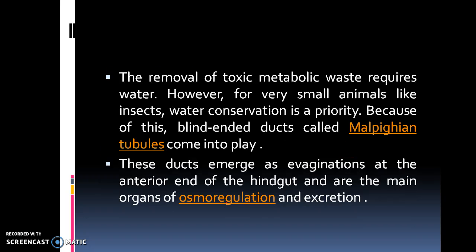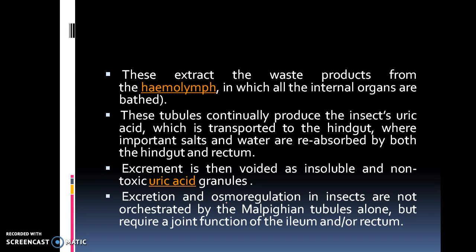The removal of toxic metabolic waste requires water. However, for very small animals like insects, water conservation is a priority. Because of this, blind dead-end ducts called Malpighian tubules come into play. These ducts emerge as evaginations at the anterior end of the hindgut and are the main organ of osmoregulation and excretion. They extract the waste products from the hemolymph, in which all the internal organs are bathed. These tubules continuously produce the insect's uric acid, which is transported to the hindgut where important salts and water are reabsorbed by both the hindgut and rectum. Excrement is then voided as insoluble and non-toxic uric acid granules. Excretion and osmoregulation in insects are not orchestrated by the Malpighian tubules alone, but require a joint function of the ileum and rectum.